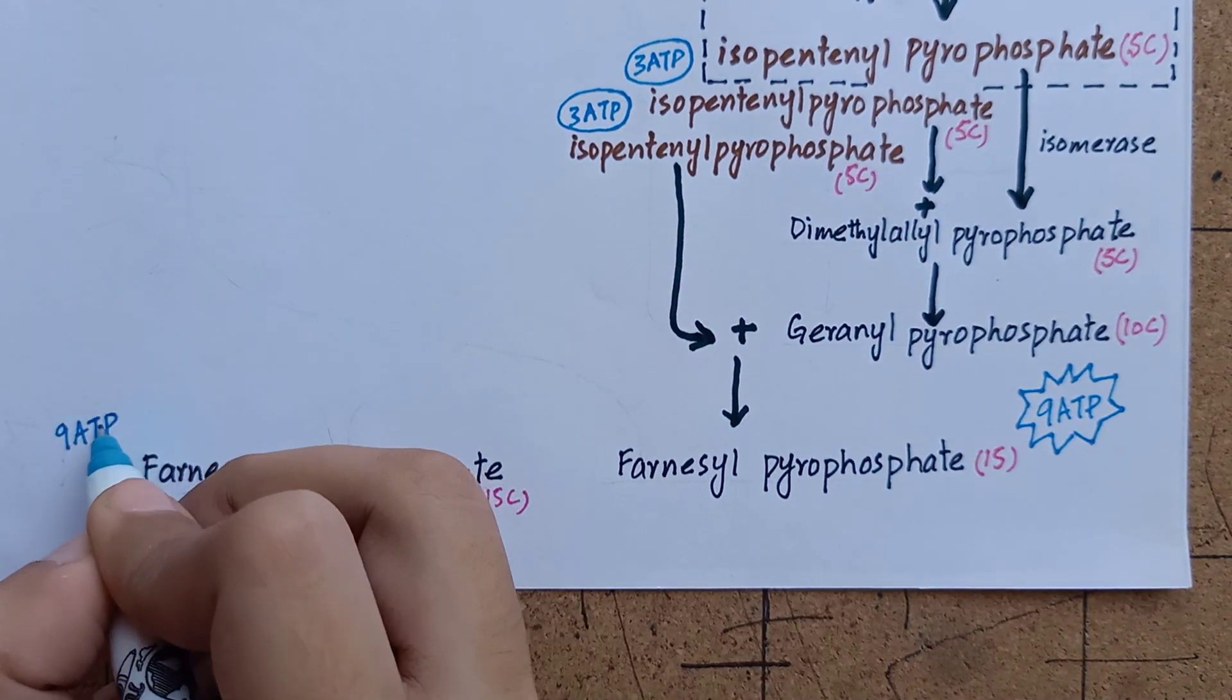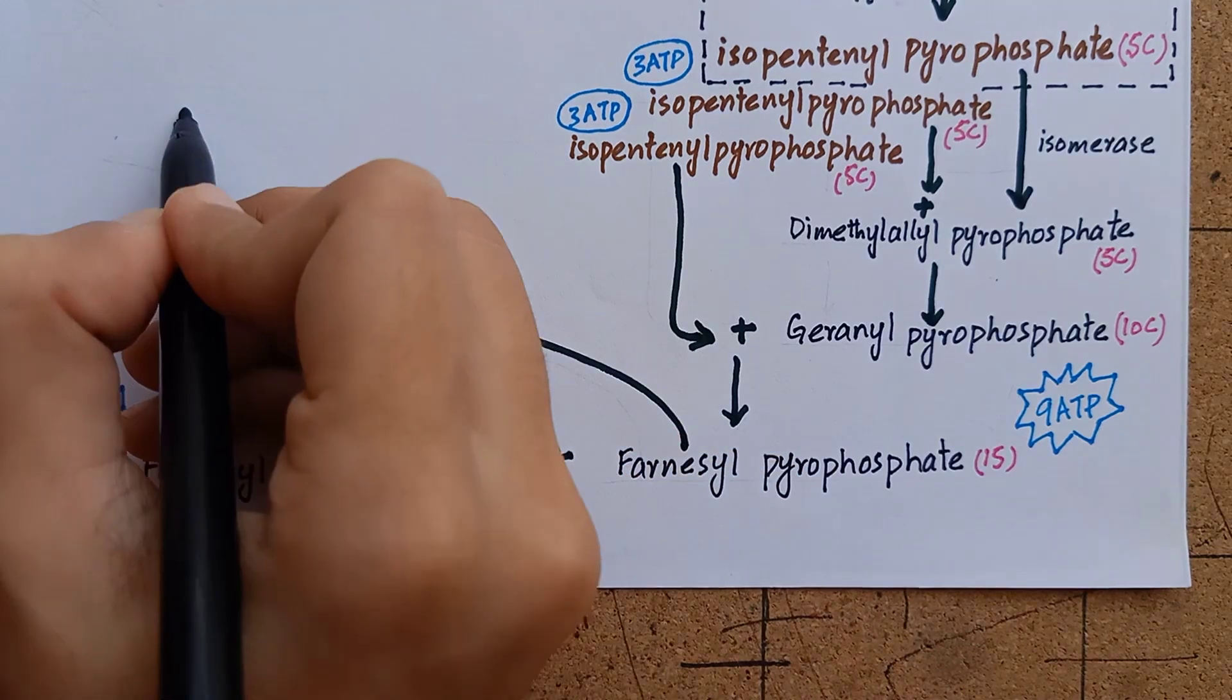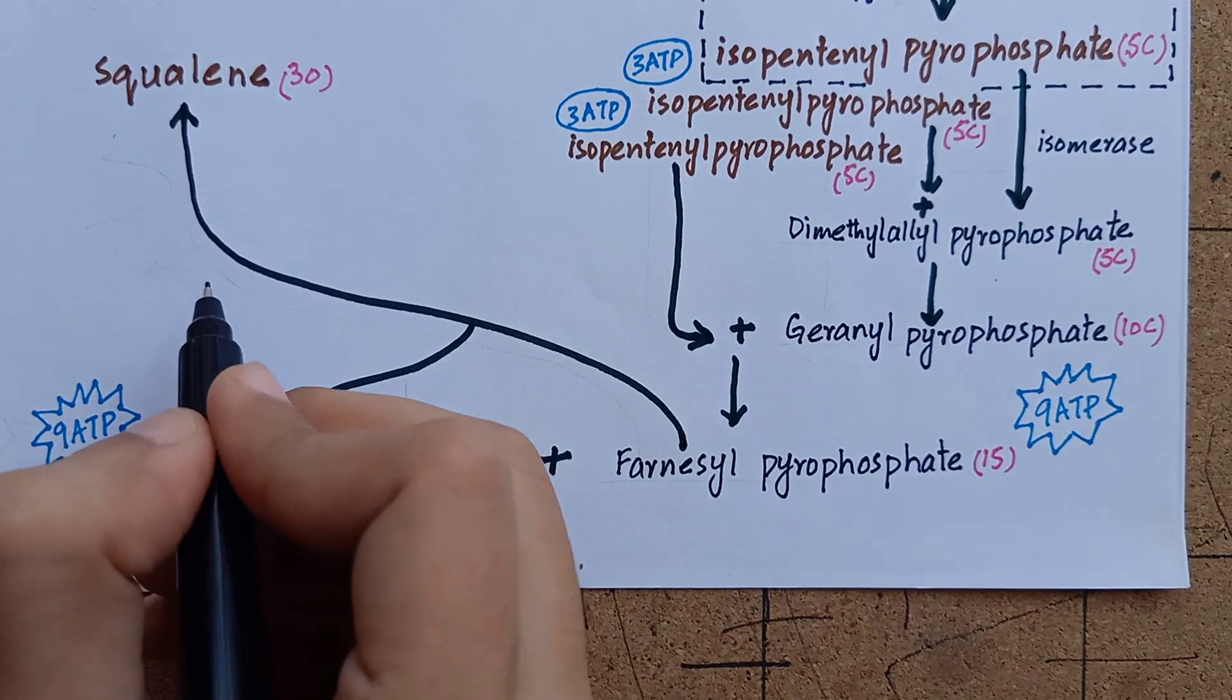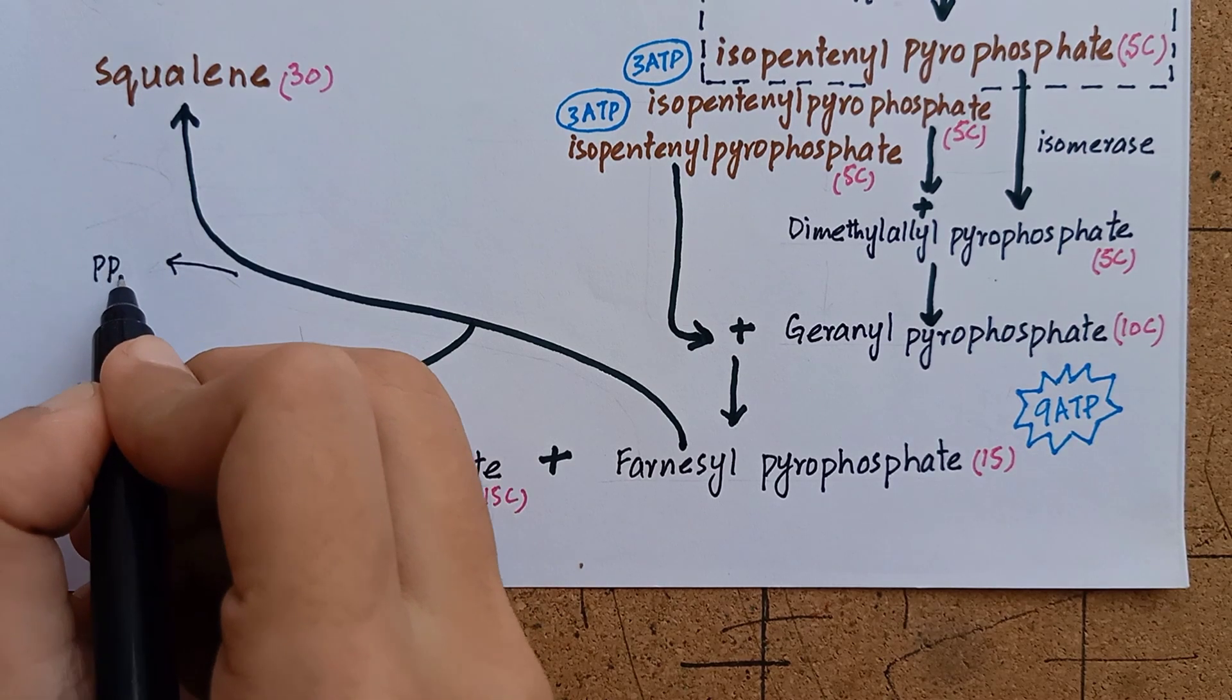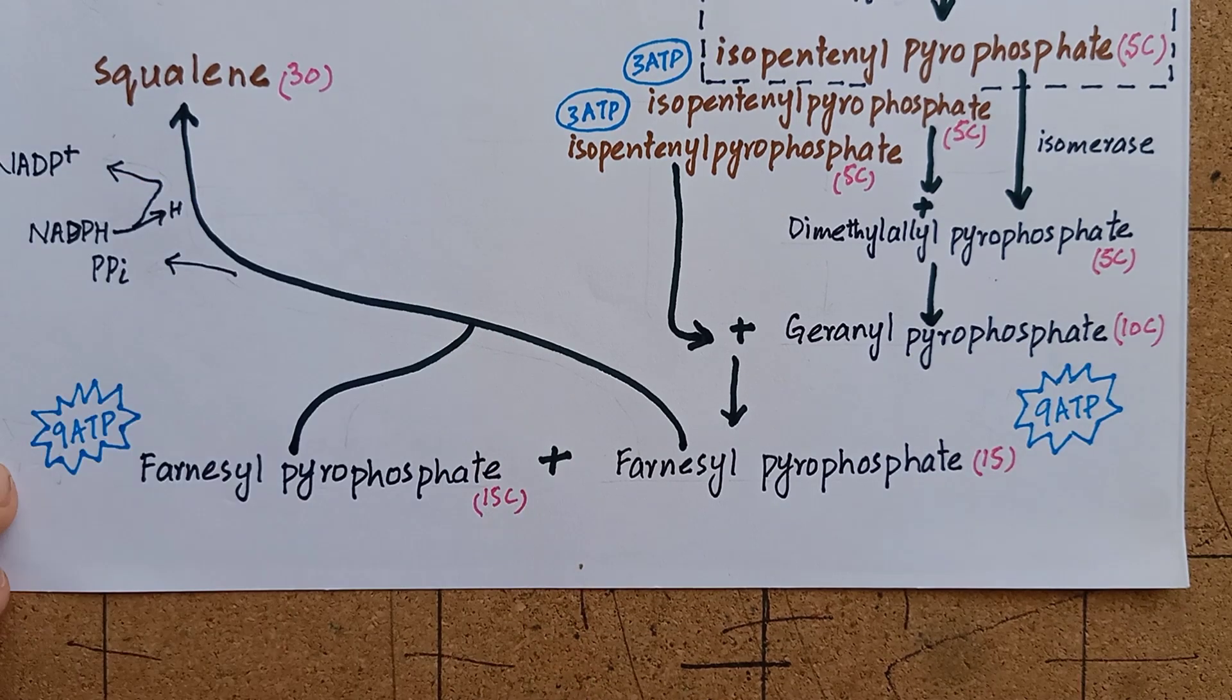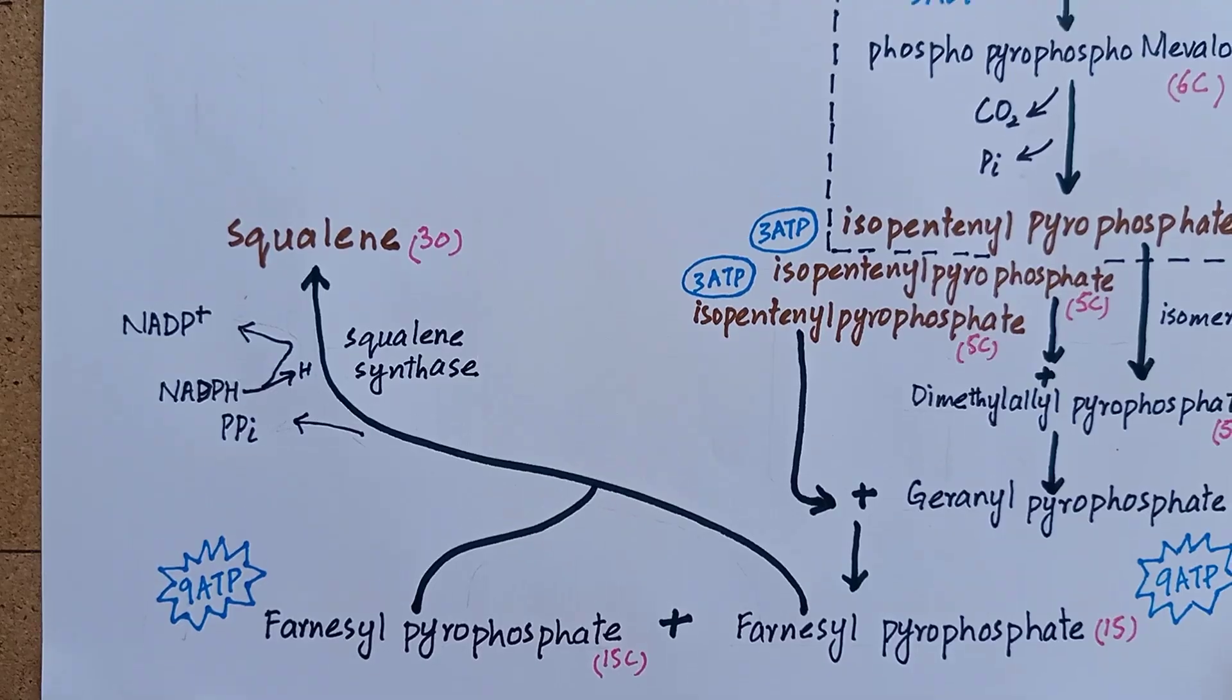These two units of 15-carbon farnesyl pyrophosphate will unite to produce a 30-carbon compound known as squalene. We don't need phosphate in cholesterol, so the phosphate groups will leave and NADPH will come to provide hydrogen atoms, which will stabilize the remaining molecule. The enzyme here is squalene synthase.